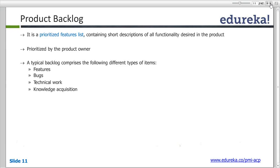But at the later stage when these requirements are to be worked on, they are detailed out in discussion with the team. The product owner just enters probably one or two lines to describe a story, but the detailed description and acceptance criteria would always be done in association with the team. He just owns it, but it's maintained and detailed out by the complete team.